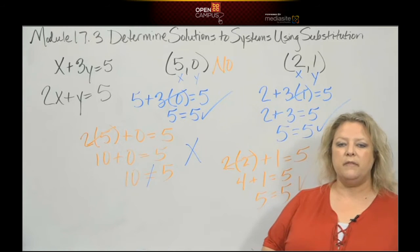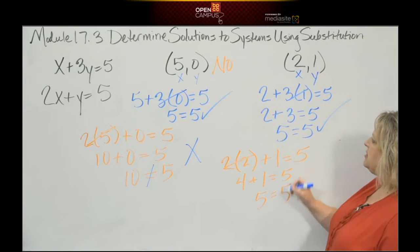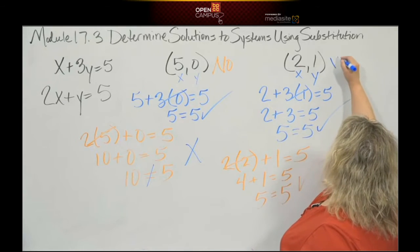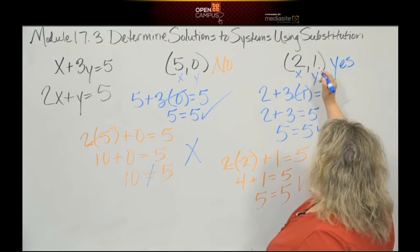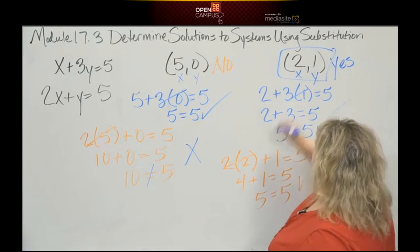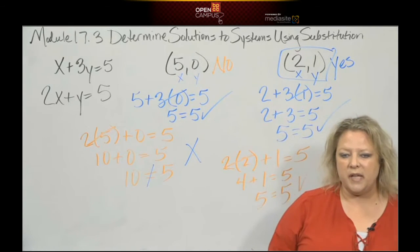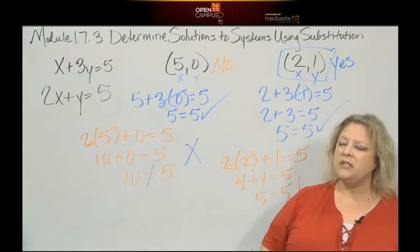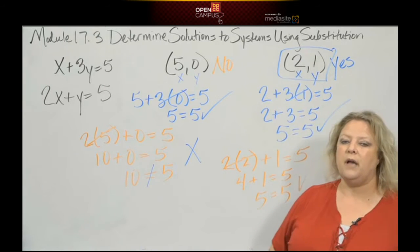Now I have a check for both—both of them are solutions. Since they are both solutions, I write yes. That is your ordered pair, that is your solution set. You would not write (5,0) because it doesn't work. You only write the solution part that works.